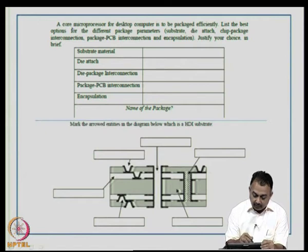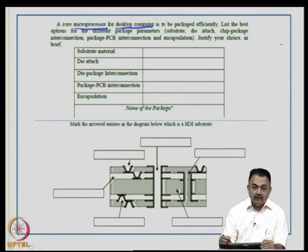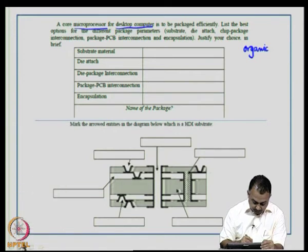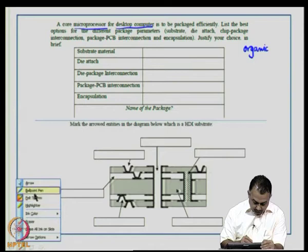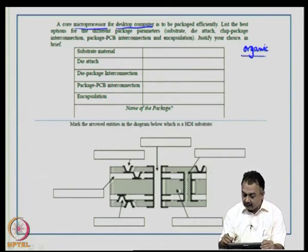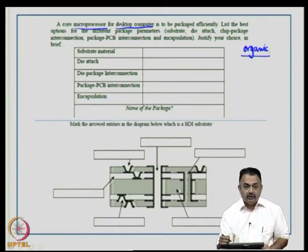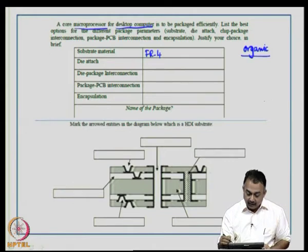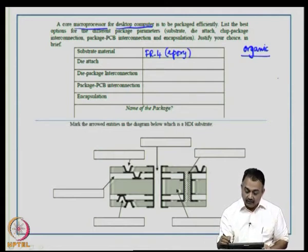Since this is a core processor for a desktop computer, there will be a motherboard — fairly large and mostly organic due to cost. For the substrate material, you would choose FR4, an epoxy-based organic material, because this desktop computer will be manufactured in the millions, making cost a key factor. Ceramic substrate is ruled out.